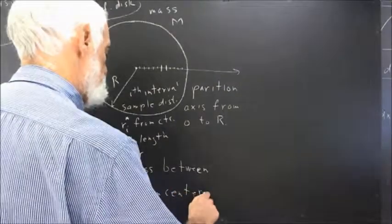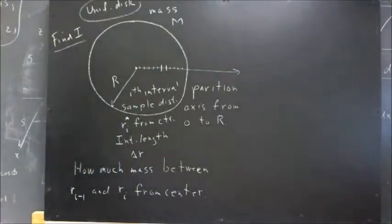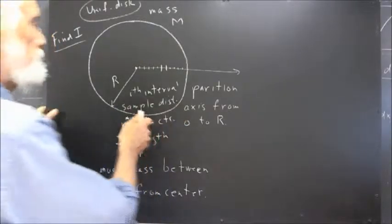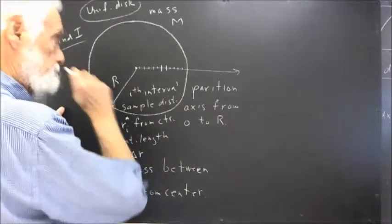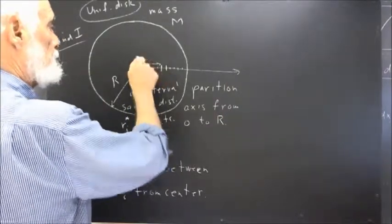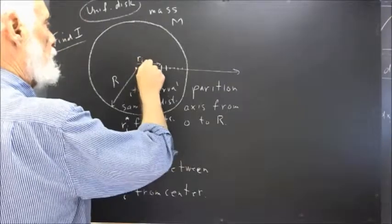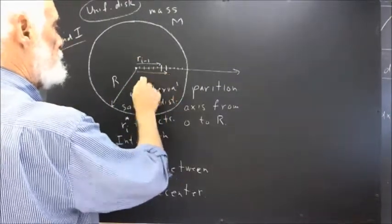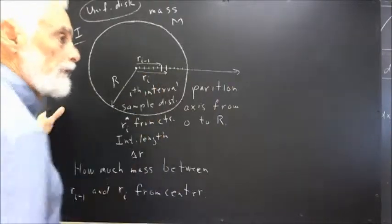Now, I could easily write this out in more formal notation, but I want to get the idea. So the idea is, here's your ith interval, and ith interval is going to be considered to run from R i minus 1 to R sub i.